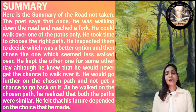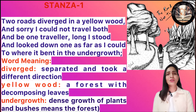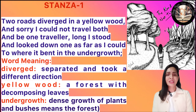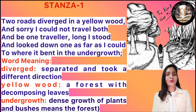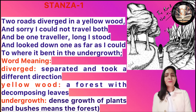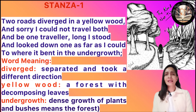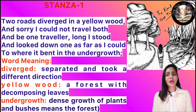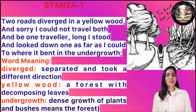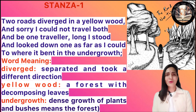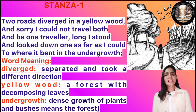Stanza number one: 'Two roads diverged in a yellow wood, and sorry I could not travel both, and being one traveler, long I stood.' Here the poet is saying that once he was going on a road and was sorry he could not travel both paths, and as one traveler he stood for a long time deciding which road to take.